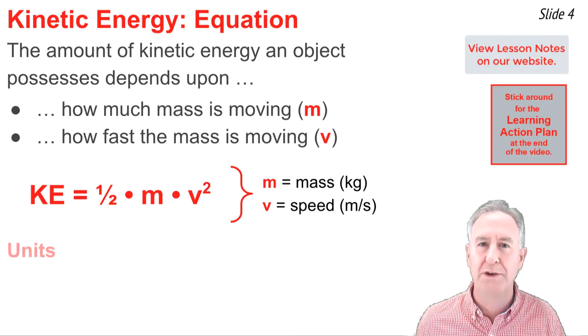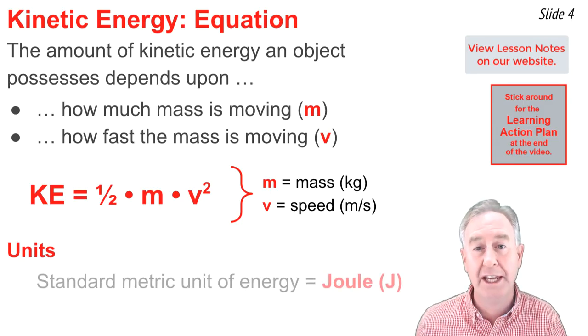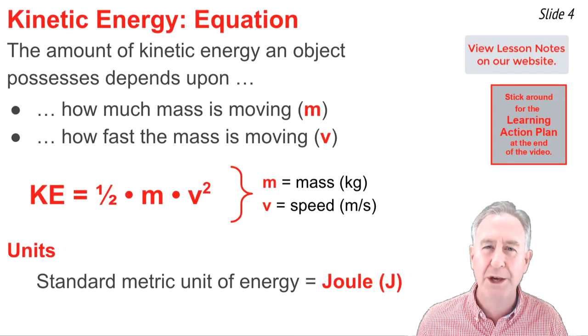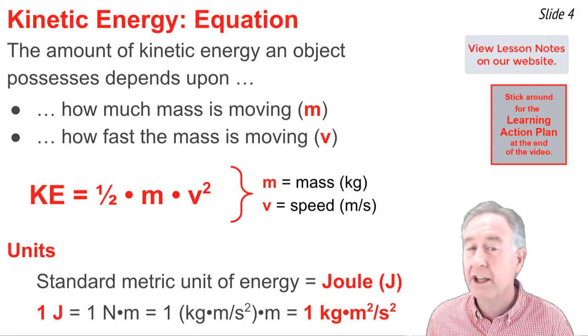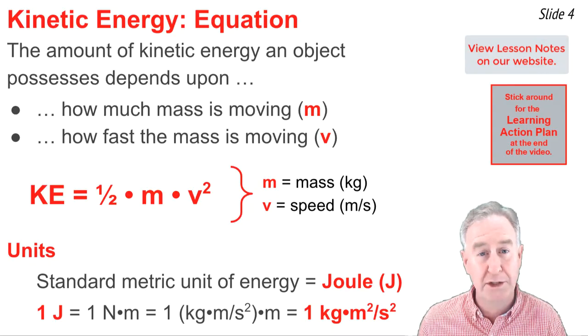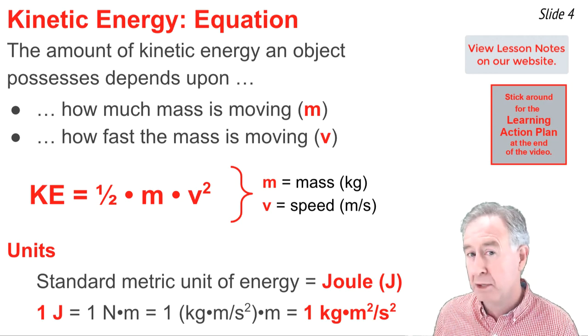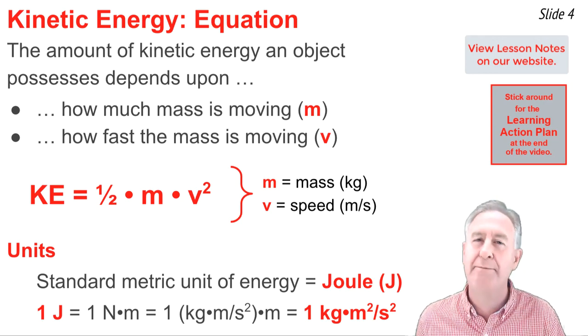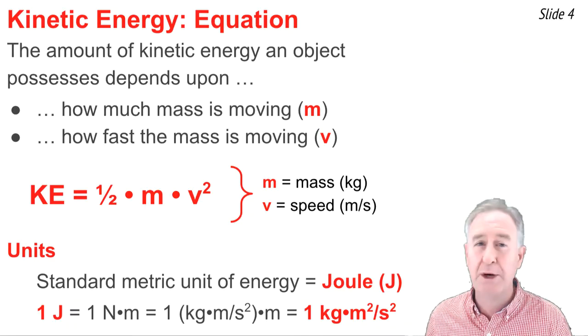If we substitute known values of mass and speed into this formula, we will be calculating the kinetic energy in units of joules, abbreviated capital J. We've learned in the work unit that one joule equals one newton times a meter. And we've learned from Newton's laws that a newton equals a kilogram times a meter per second squared. So we can say that one joule equals one kilogram times a meter per second squared, multiplied by a meter. If we simplify that mass of units, we have one joule equals one kilogram times a meter squared per second squared.